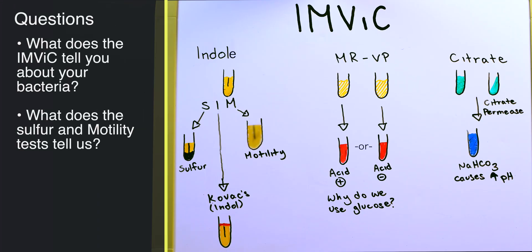So some good test questions when you're looking over your IMVIC test is what does this profile tell you about your bacteria? What kinds of things does it use as a carbon source? And also, what did we learn about the bacteria from our SIM test?